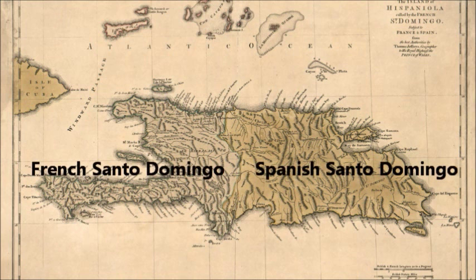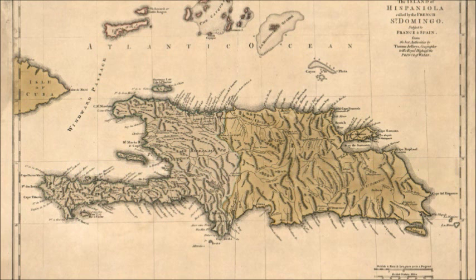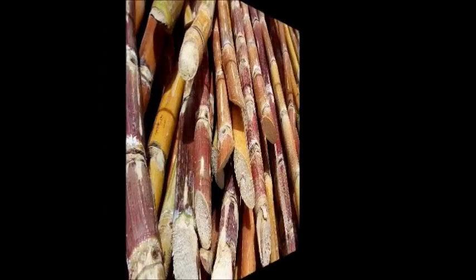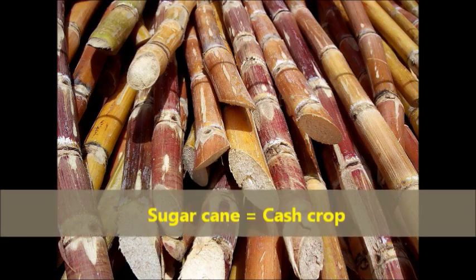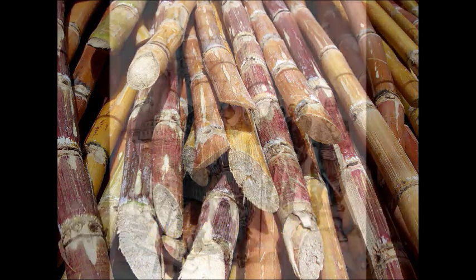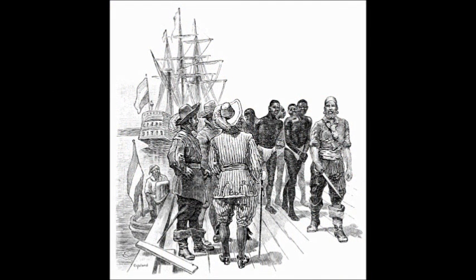The very first revolution in Latin America happened in the small Caribbean island of Hispaniola. You probably know Hispaniola as the islands of Haiti and the Dominican Republic, but back in those days it was called French and Spanish Santo Domingo. During the 18th century, the island of Hispaniola was divided into two European colonies. The French occupied the westernmost third of the island, and the Spanish occupied the two-thirds in the east. These colonies were primarily used to grow sugar cane and other agricultural products for export back to France and Spain. Over half a million African slaves were brought to the French half of Hispaniola as part of the Atlantic Triangular Trade.